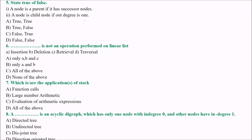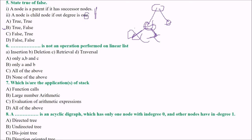Next, answer true or false — read very carefully. Let us check option B: a node is a parent if it has successor nodes — of course, that is correct. A node is a child node if the outdegree is 1. However, a node cannot be absolutely called a child node just because the outdegree is 1; the outdegree can be more than 1. So this is false, and we take the answer as false.